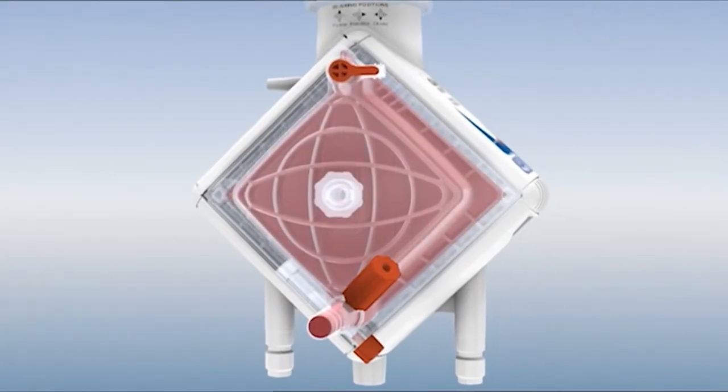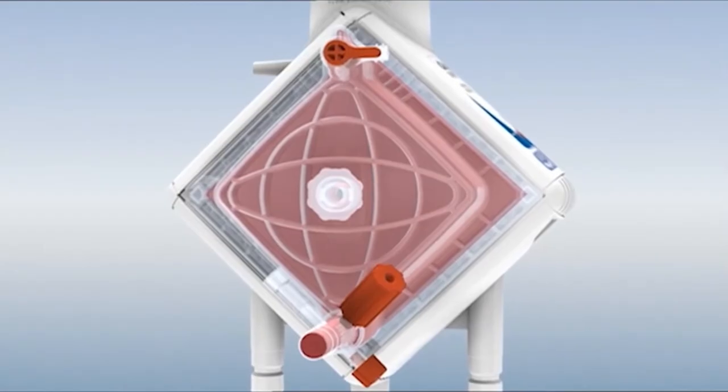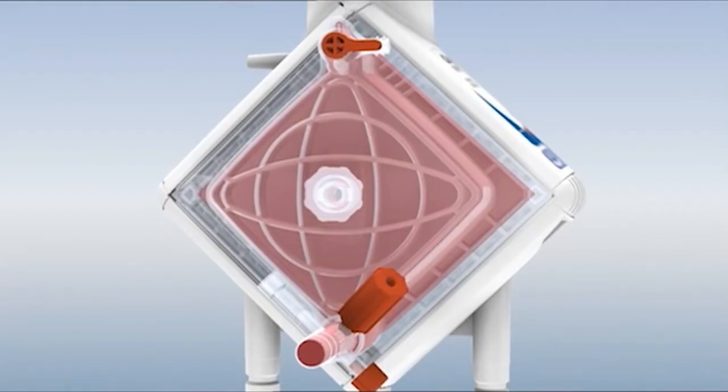The warmer object, the blood, becomes colder, while the cooler object, the water, becomes warmer. Thus, the heat exchanger cools the blood to the desired temperature.